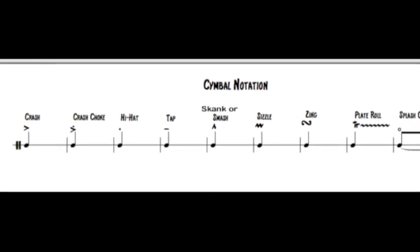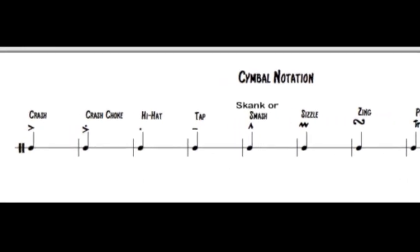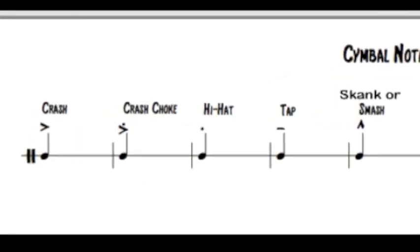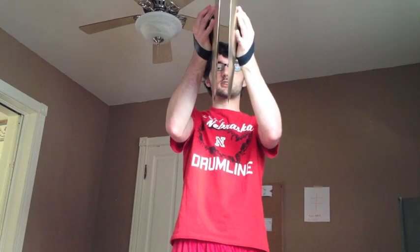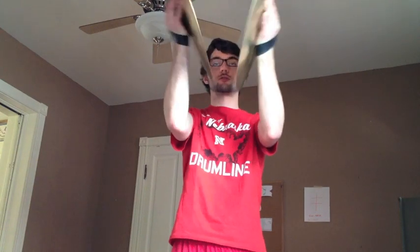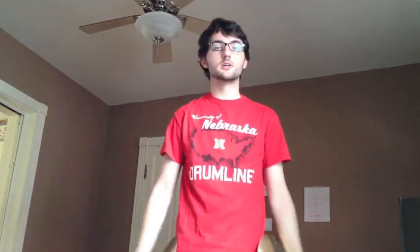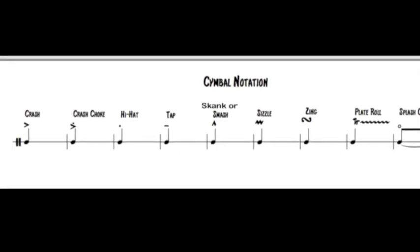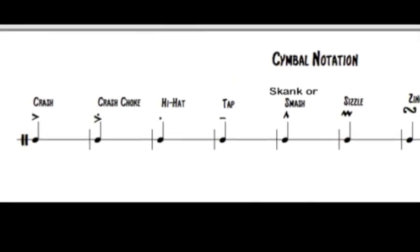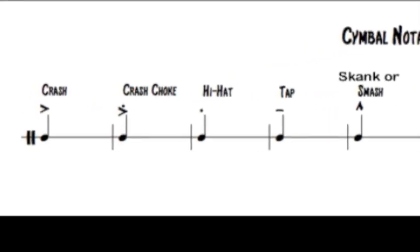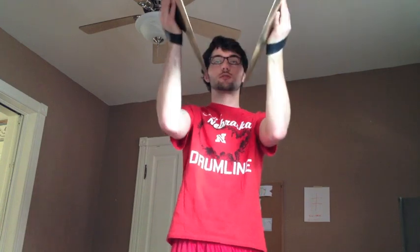The first one is crashes — it's just your basic accent, and a crash looks like this. The second one is a crash choke, which is your accent with the dot on top, which looks like this.